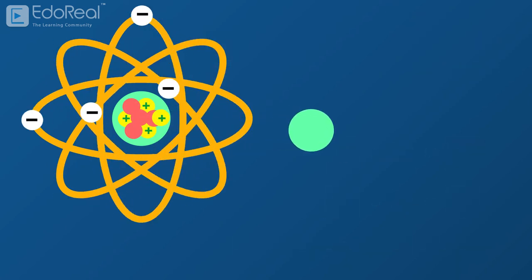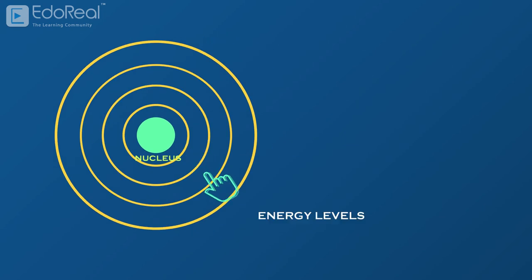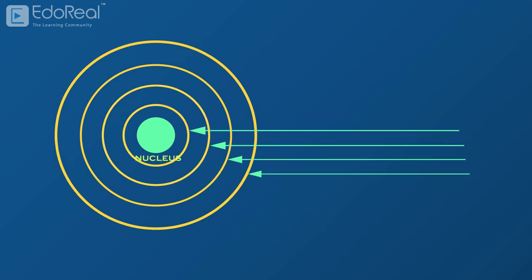The electrons revolve around the nucleus in certain orbits called electron shells. These are also called energy levels, since these shells are arranged around the nucleus according to the energy that an electron in that shell is composed of. The shell that has the lowest energy is nearest to the nucleus.